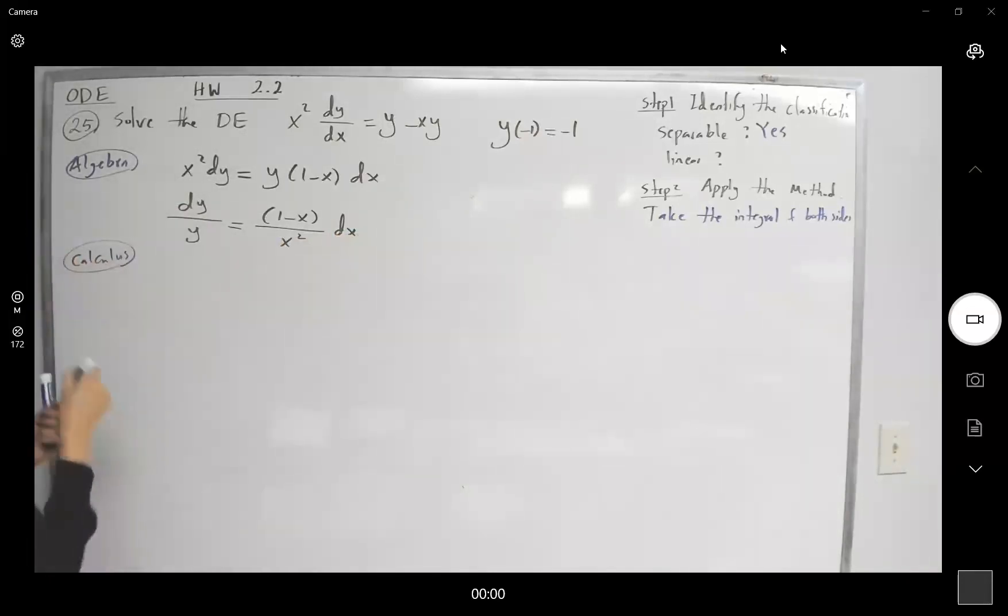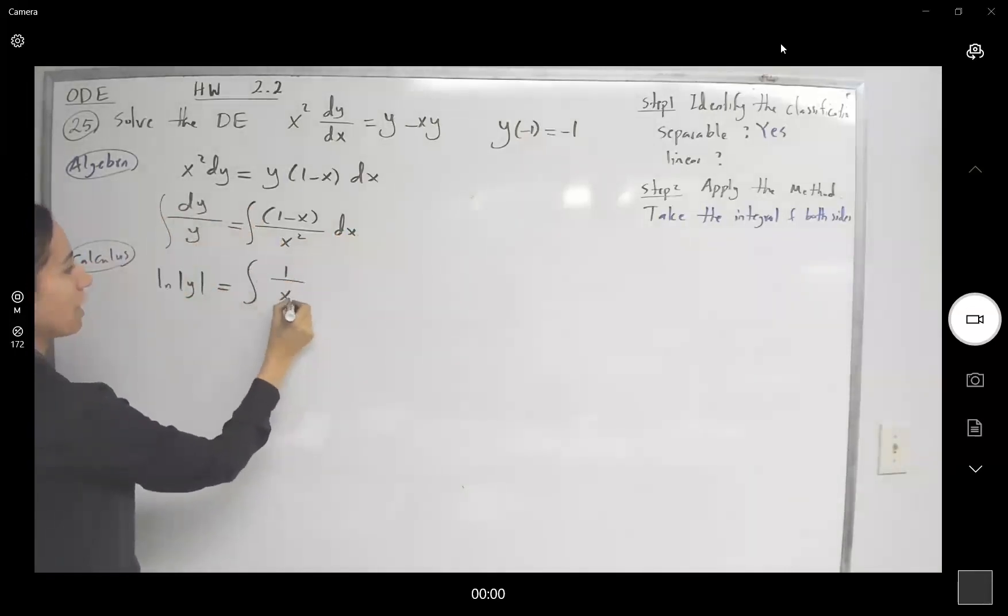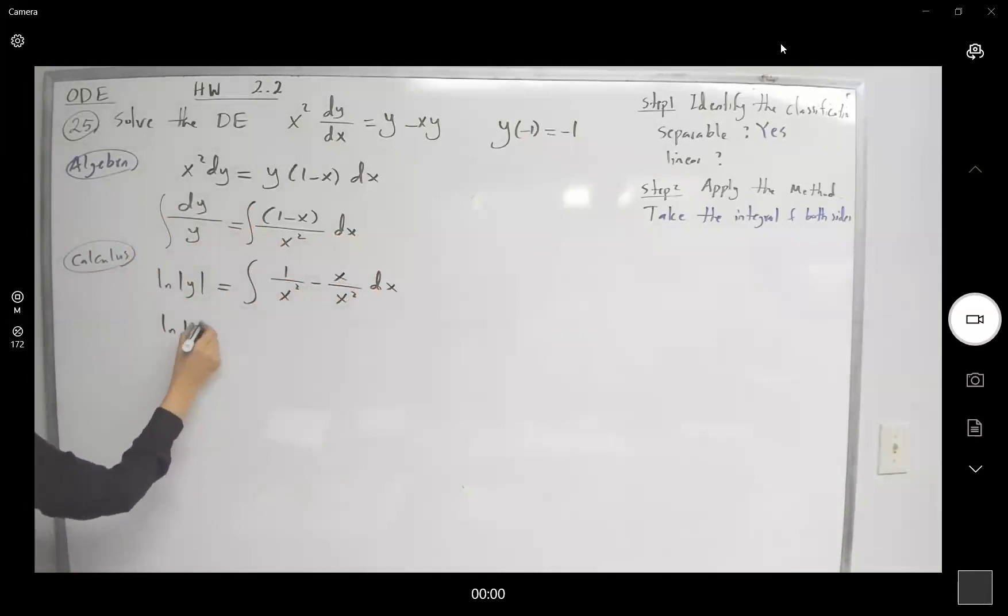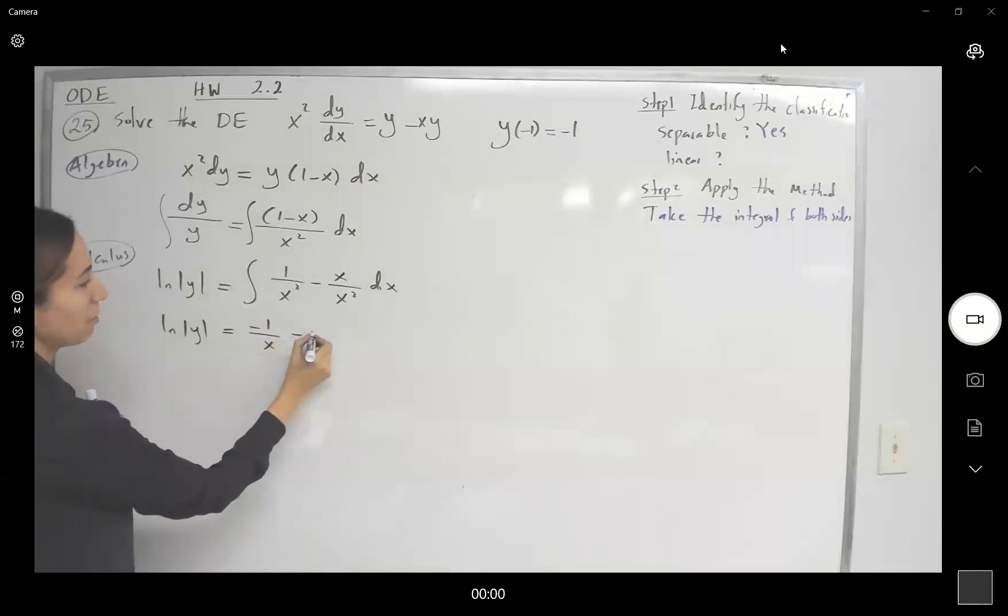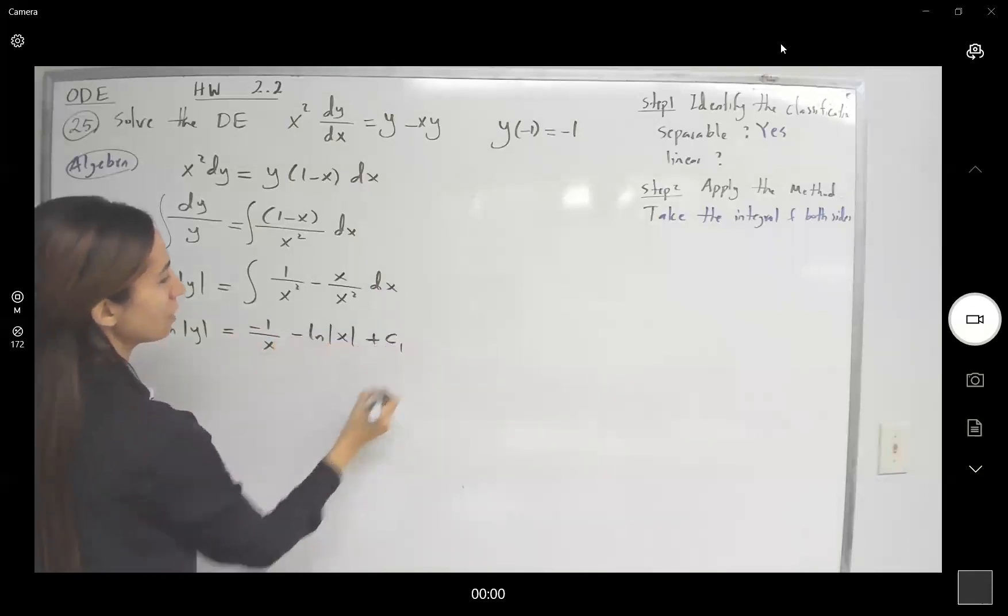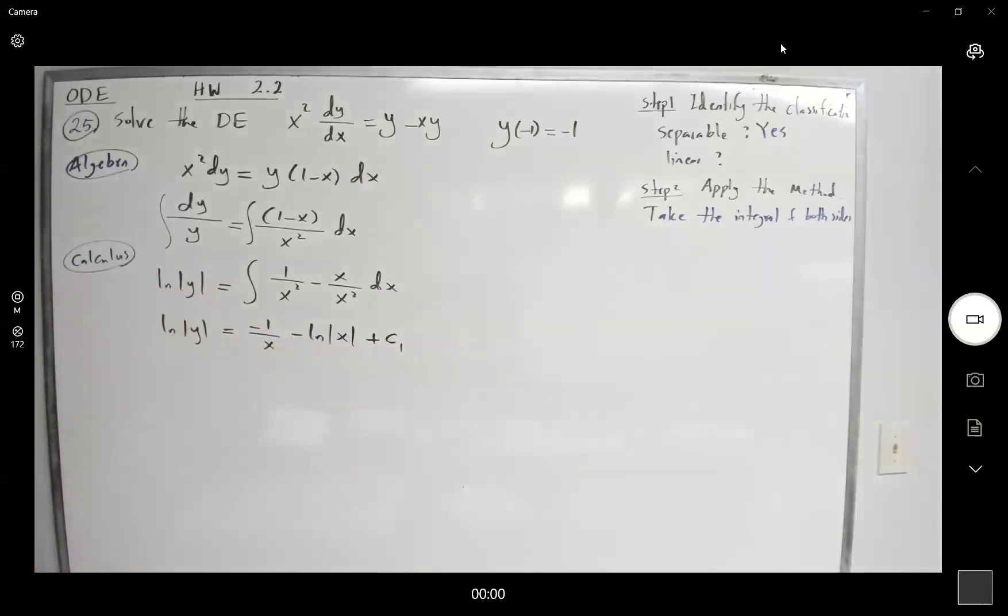Take the integral of both sides. We get ln of absolute value of y equals, here you have, let us separate these integrals, 1 over x squared minus x over x squared dx. So ln of absolute value of y becomes negative 1 over x minus ln of absolute value of x plus constant of integration.